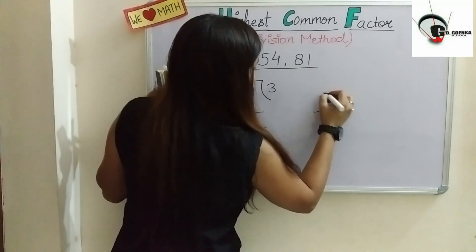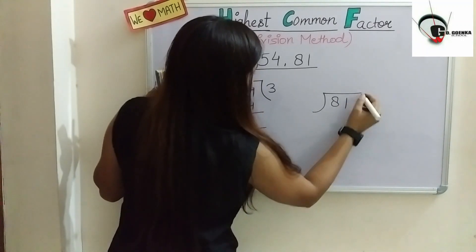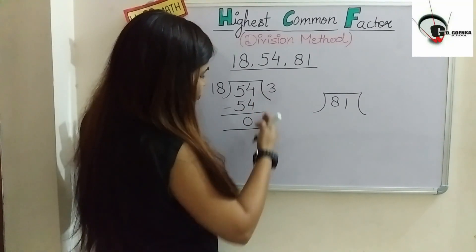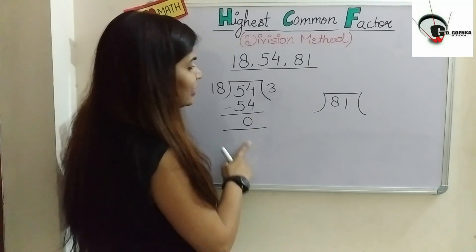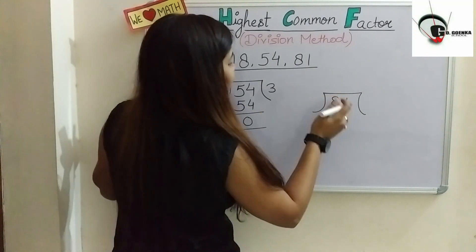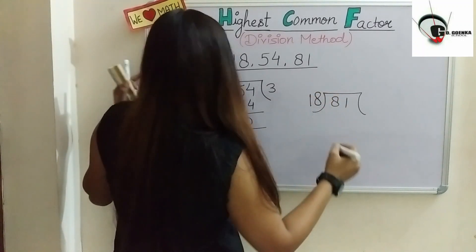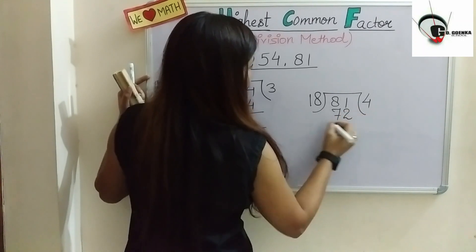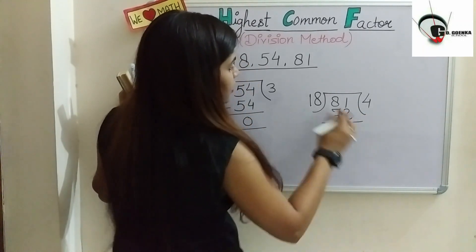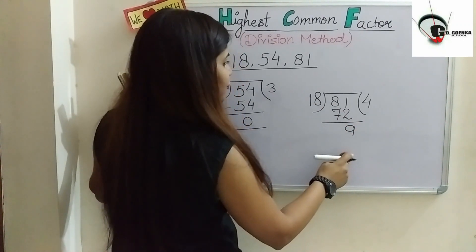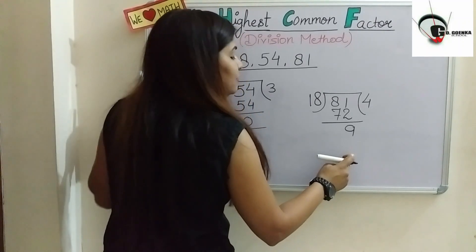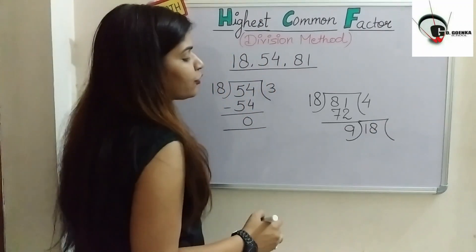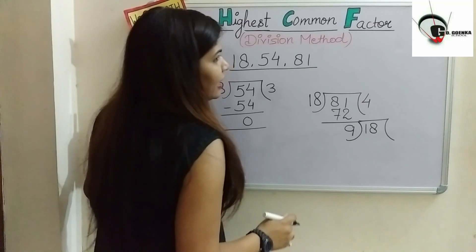If we get 0, we take the last divisor, which is 18, and divide the remaining third number, 81, by it. 18 ones are 18, 18 twos are 36, 18 threes are 54, 18 fours are 72 — and we have 9 as the remainder. Now 9 becomes the new divisor and 18 becomes the new dividend. We check 18 with 9: 9 ones are 9, 9 twos are 18.